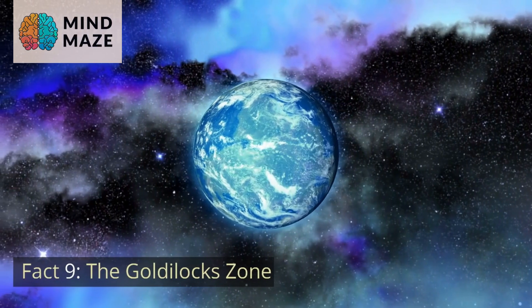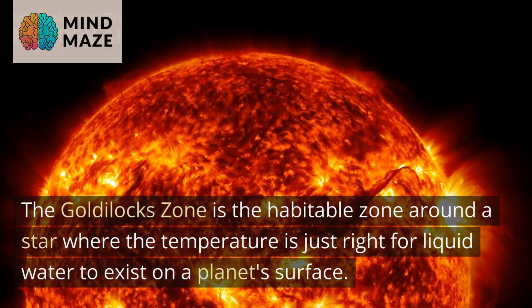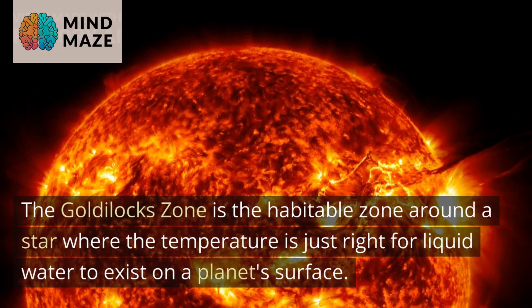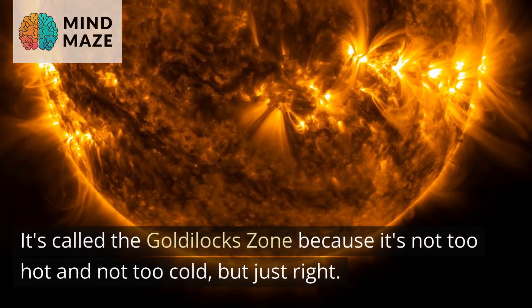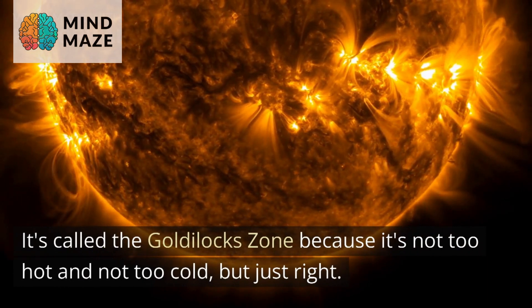Fact nine: The Goldilocks Zone. The Goldilocks Zone is the habitable zone around a star where the temperature is just right for liquid water to exist on a planet's surface. It's called the Goldilocks Zone because it's not too hot and not too cold, but just right.